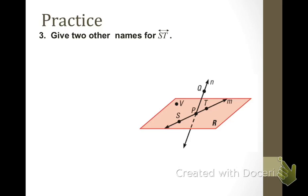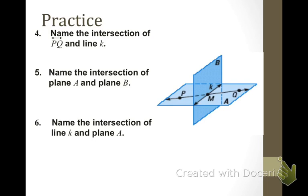Give two other names for line ST. Notice that line ST is the line that's laying on the plane, and it also has the cursive letter M associated with it. So, I'm going to use line PS with a line with arrows above it and the word line with the letter M as two other ways to name line ST.